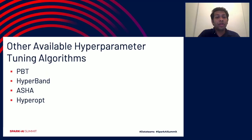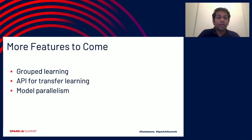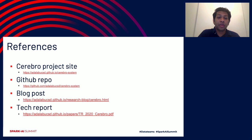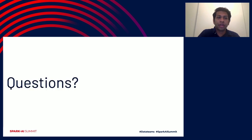In addition to grid search, we also support several other hyperparameter tuning algorithms, such as population-based tuning, Hyperband, ASHA, and Hyperopt. We are also working on several other features in Cerebro, such as support for federated learning, APIs for transfer learning, and model parallelism. If you're interested in learning more about Cerebro Spark, you can check our project website. The code is open-sourced under the Apache license and can be accessed on GitHub. For technical details about Cerebro or MHP, you can check our blog post or the tech report. Thank you.